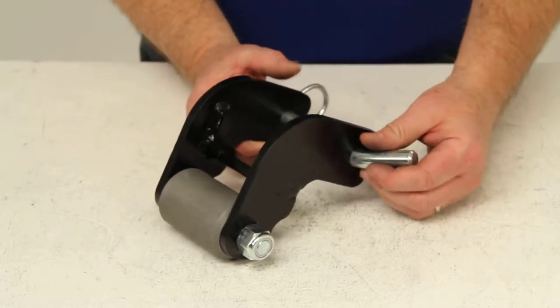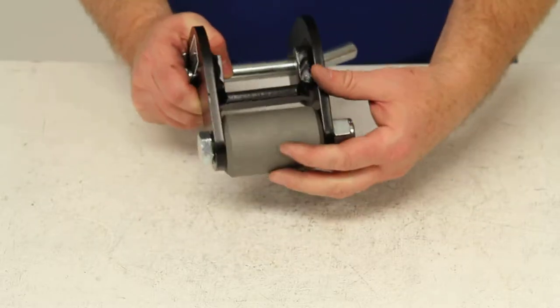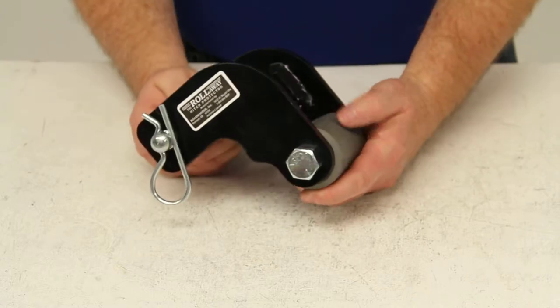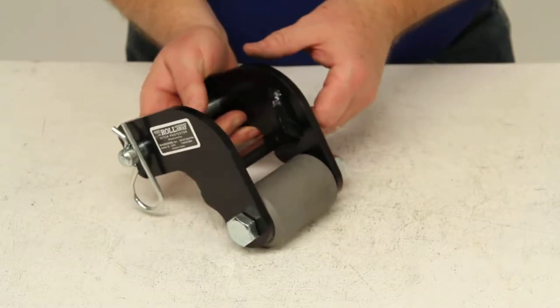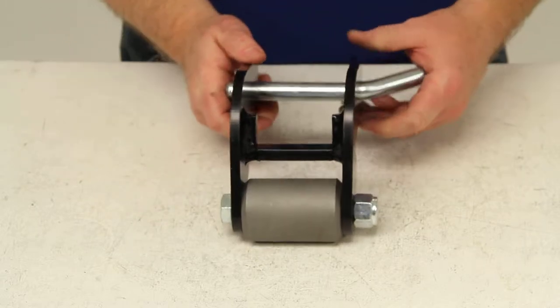Today we're going to review part number RM-050. This is the Roadmaster Roll-Away Trailer Hitch Protector. This part will prevent the trailer hitch on your vehicle from digging and dragging on pavement.